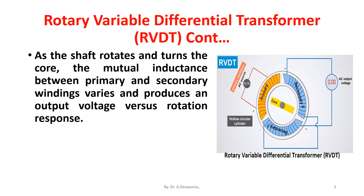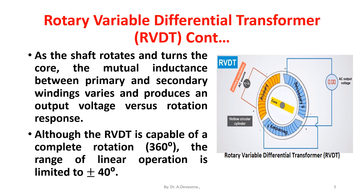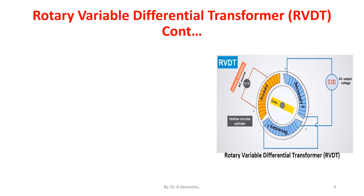Although the RVDT is capable of a complete rotation of 360 degrees, the range of linear operation is limited to plus or minus 40 degrees. The linearity of a typical RVDT having a range of plus or minus 40 degrees is about 0.5 percentage of range.